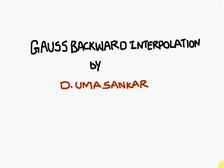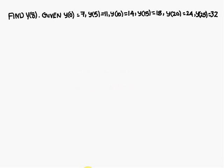Today we are going to discuss Gauss backward interpolation. The given problem is: y(0) = 7, y(5) = 11, y(10) = 14, y(15) = 18, y(20) = 24, and y(25) = 32. We have to find y(8).